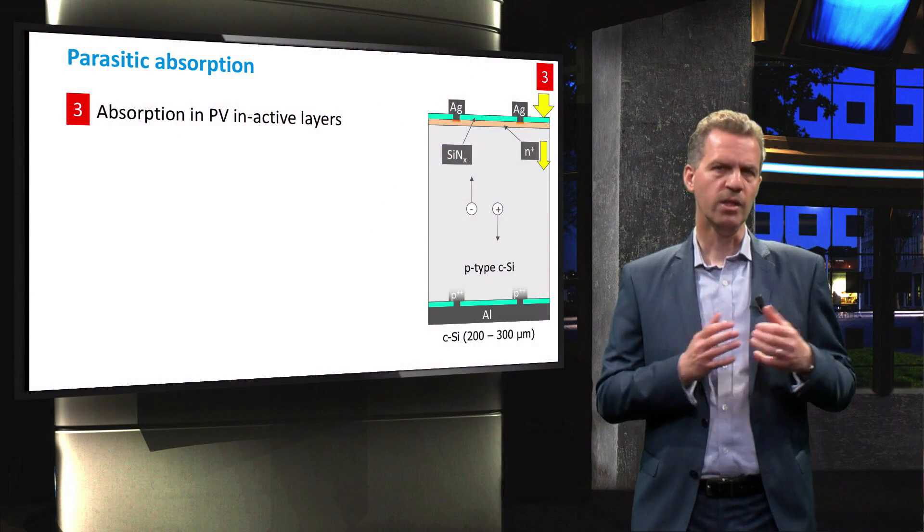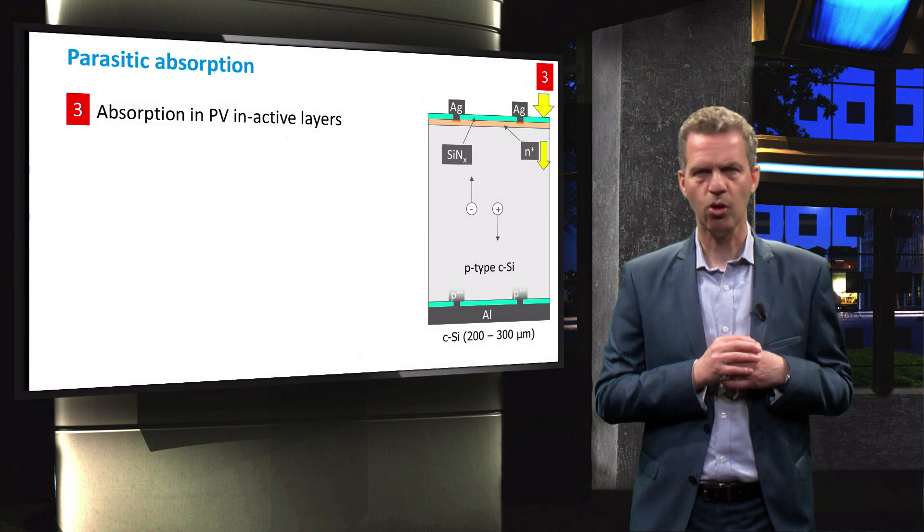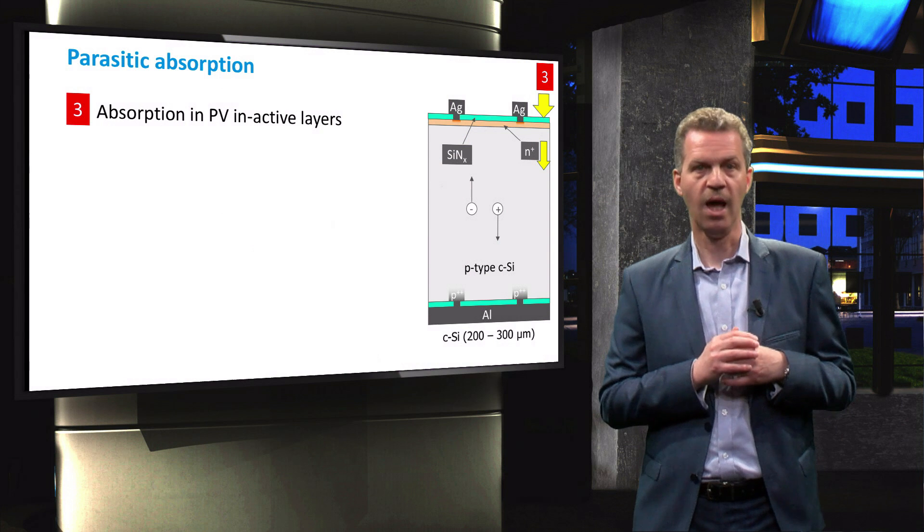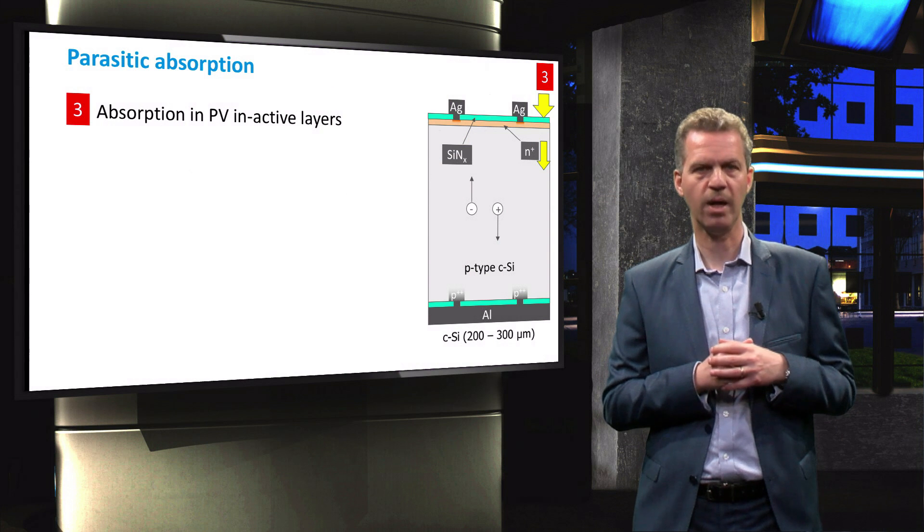Now that we have minimised reflection of light at the front surface, we will shortly talk about the parasitic absorption losses. These losses refer to light that is absorbed in layers that do not contribute to the generation of electron-hole pairs and thus where no photovoltaic power is generated.